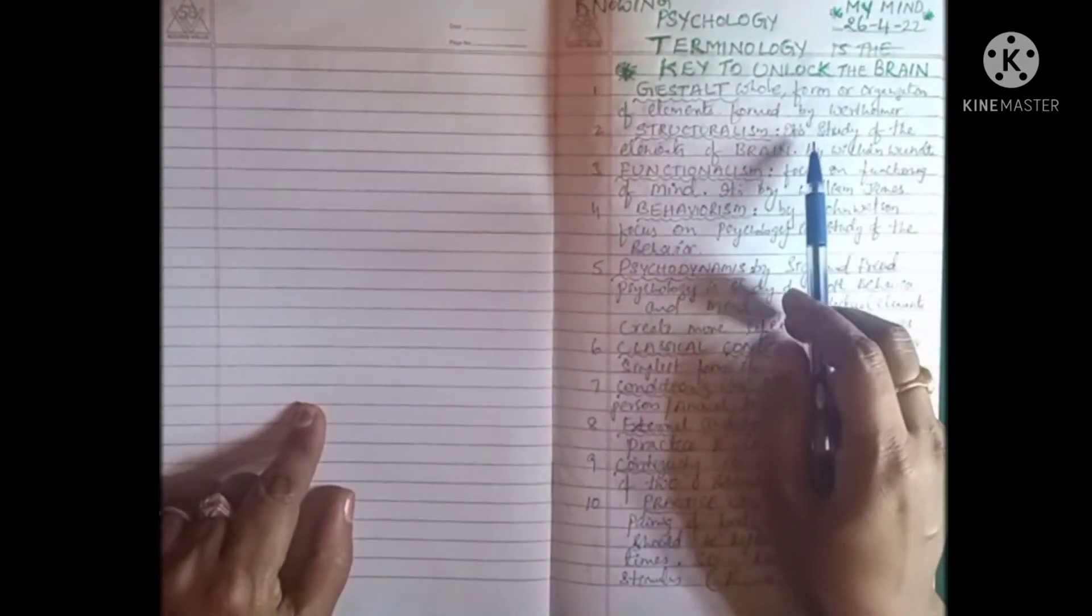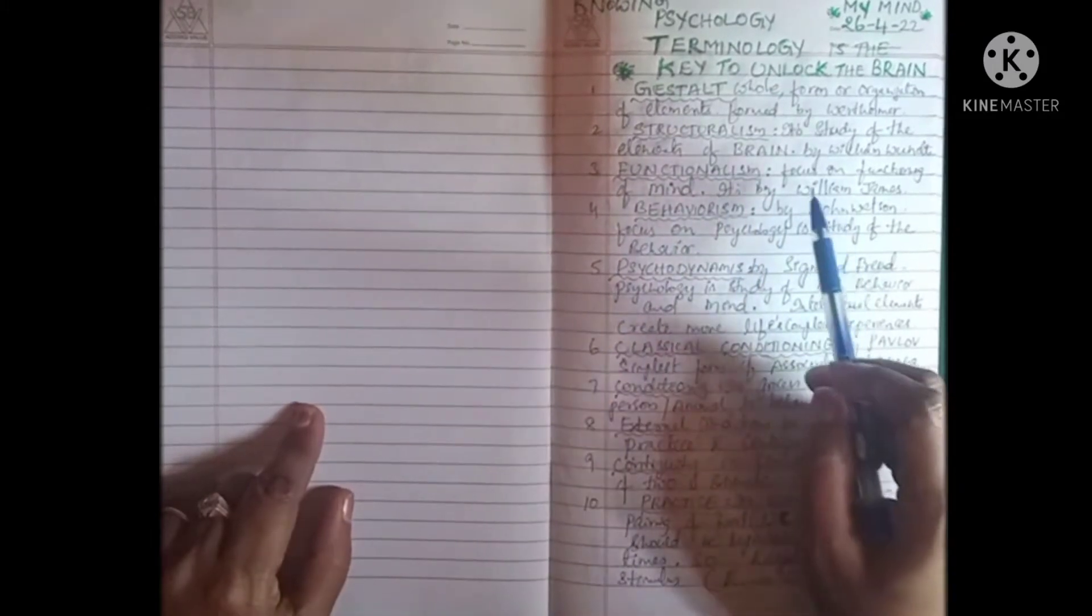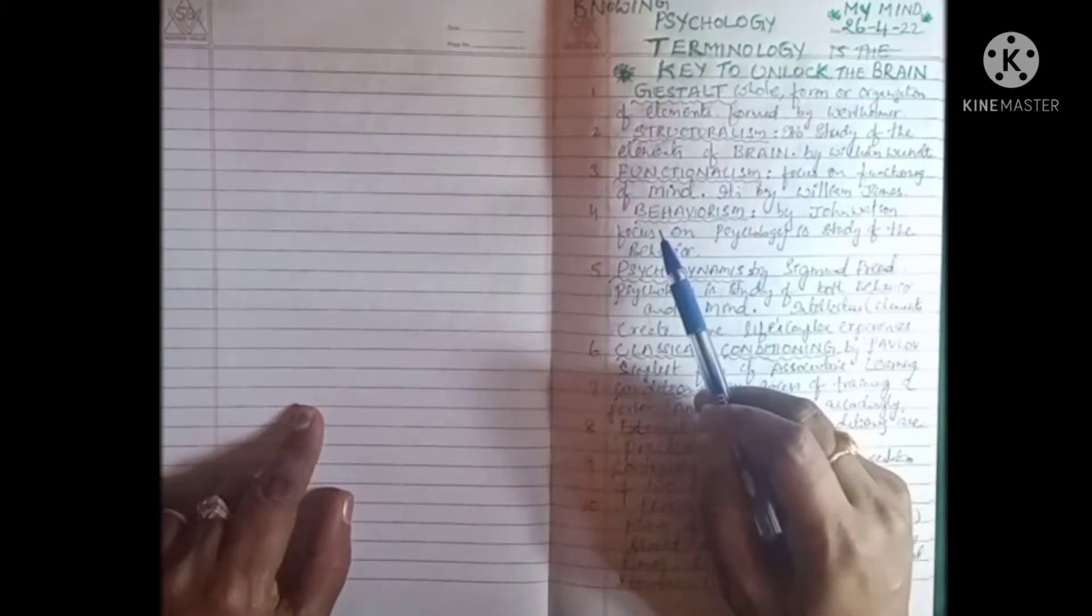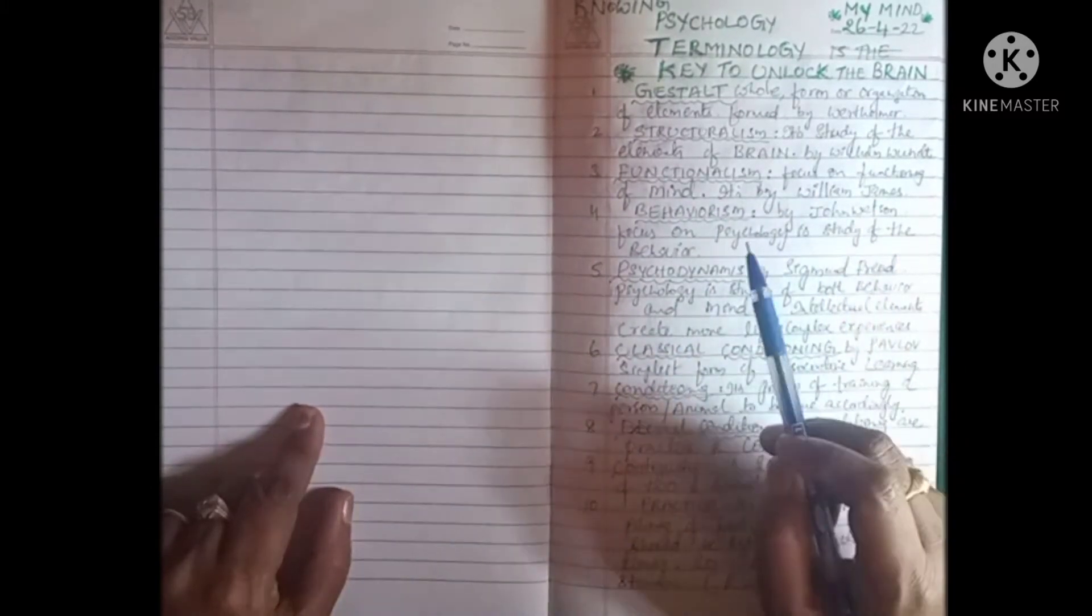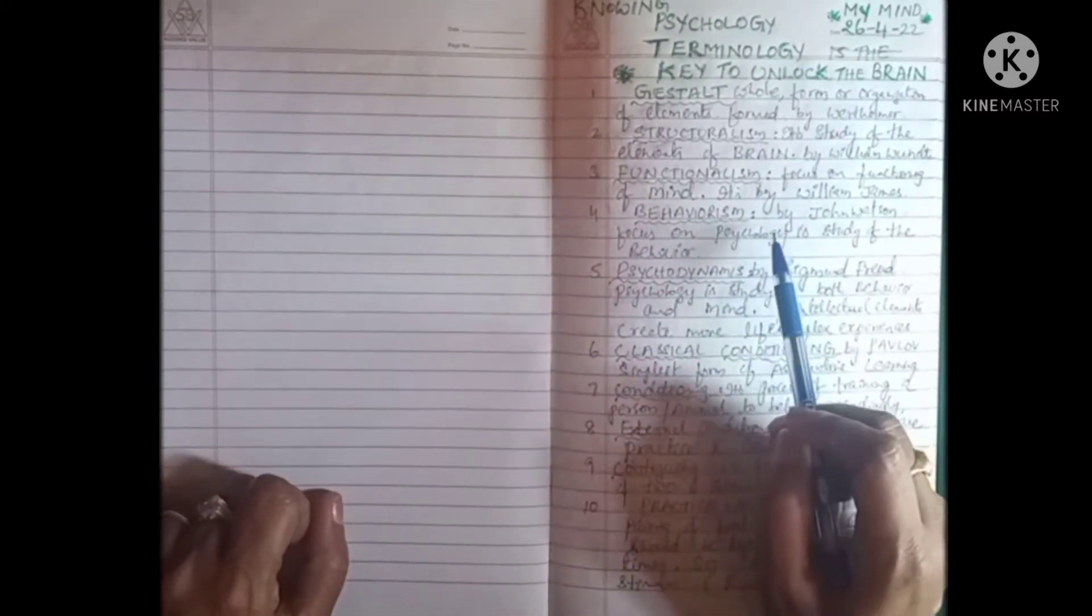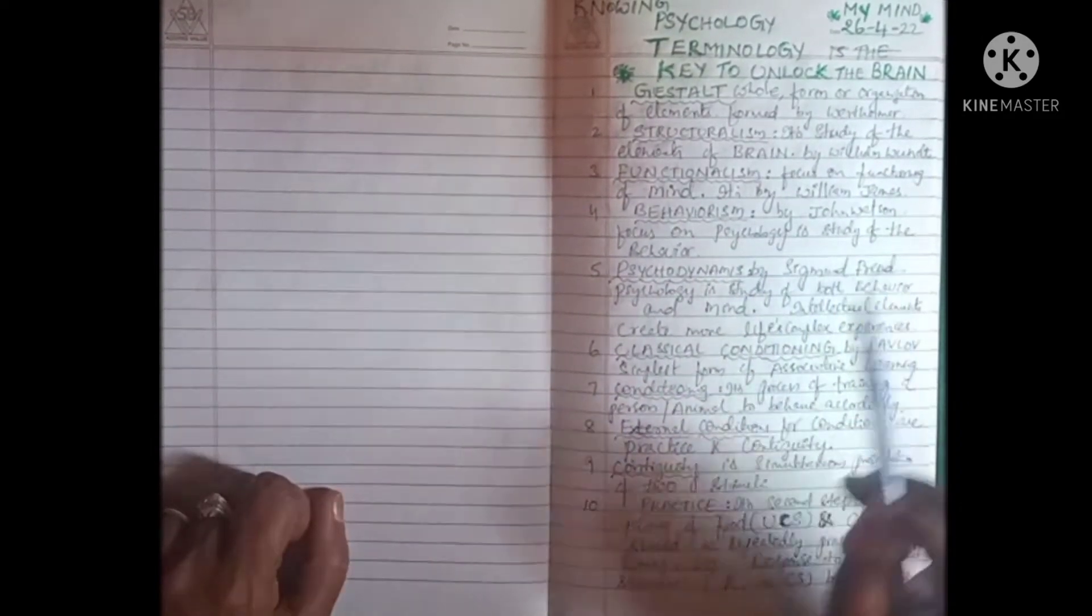Structuralism is a study of elements of brain, given by William Wundt. Functionalism focuses on functioning of the mind, given by William James. Behaviorism by John Watson focuses on psychology as study of behavior.